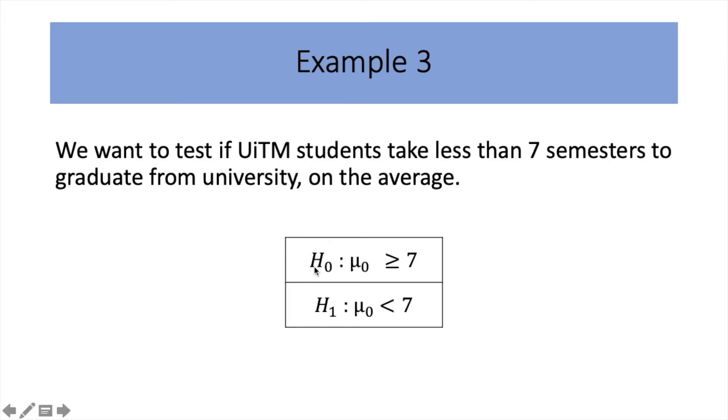So, your H0, the hypothesized mean is greater than or equal to 7. And your alternative hypothesis is your hypothesized mean less than 7 semesters. So, this is how you write your hypothesis.